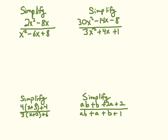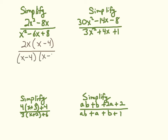The next one: 2x squared minus 8x over x squared minus 6x plus 8. I factor the numerator — common factor of 2x gives (x minus 4). For the denominator, factors of 8 that sum to negative 6 give (x minus 4)(x minus 2). I cancel the common factor of (x minus 4). The 2 and x can't cancel because 2 is not a factor of the denominator, so the answer is 2x over (x minus 2).